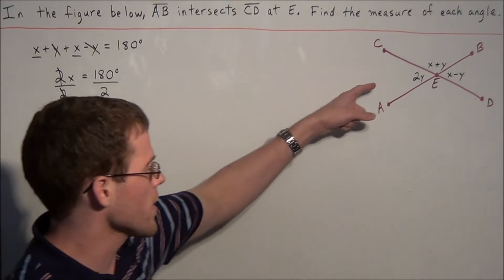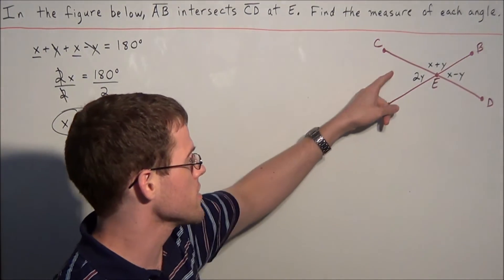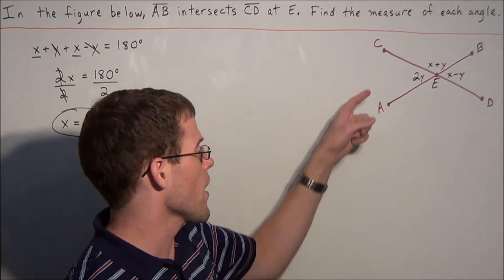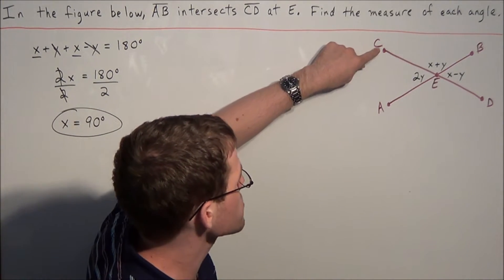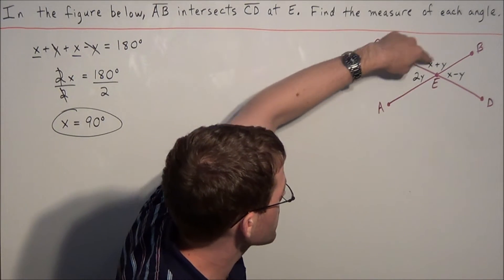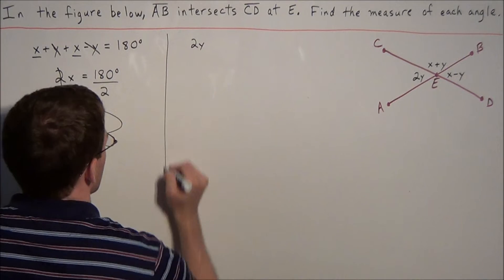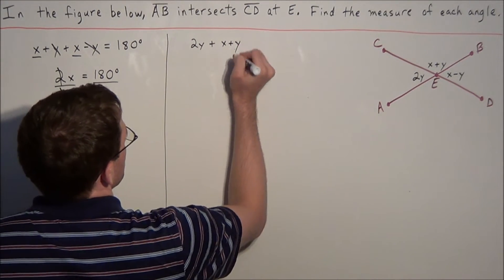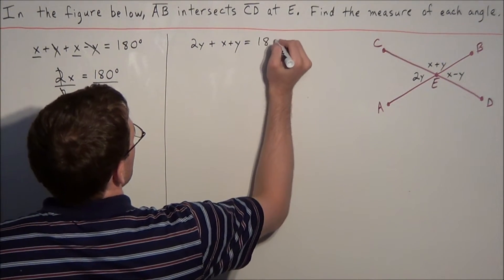Now this doesn't tell us the value of any of these angles, because these angles are in terms of X and Y. This tells us we need to set up another equation to find the value of Y. Notice that angle AEC and angle CEB are also supplementary angles because they form a straight line. So we can set up another equation: 2Y plus X plus Y equals 180 degrees.